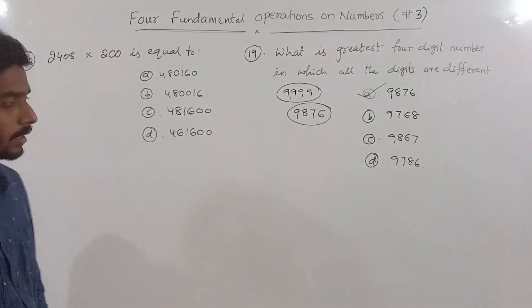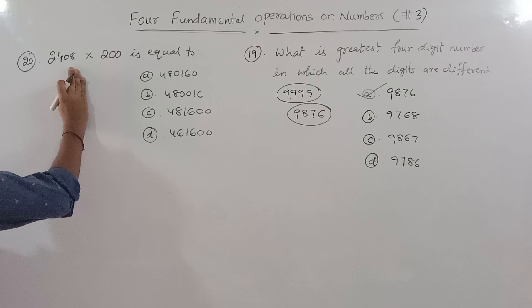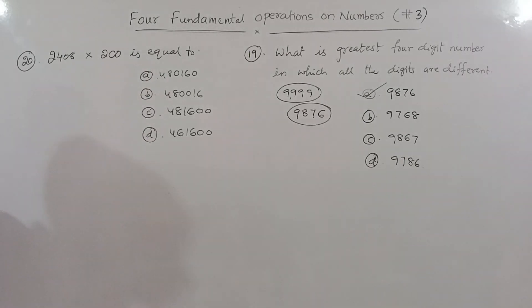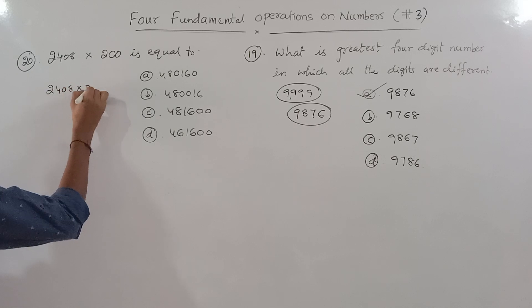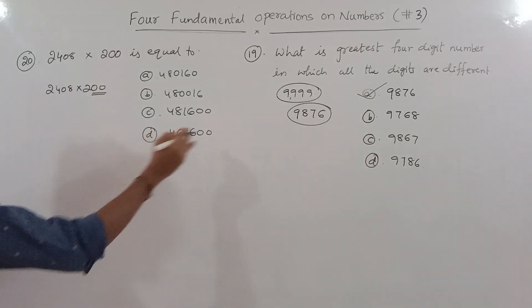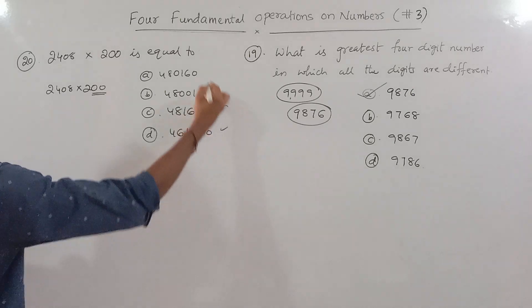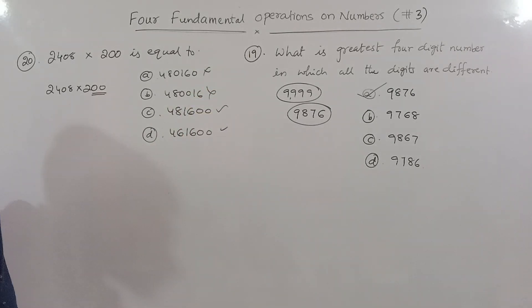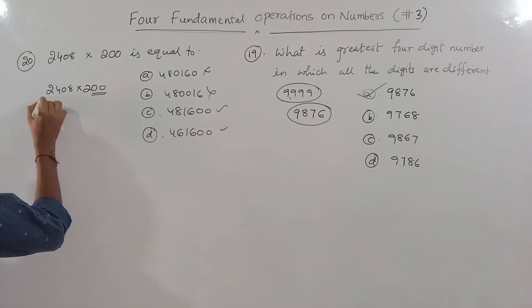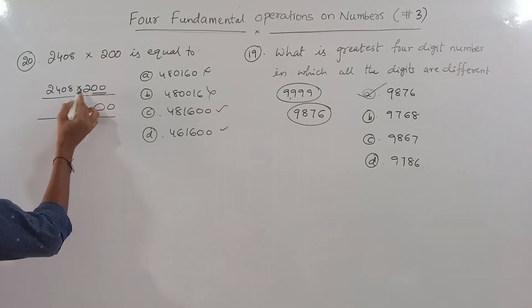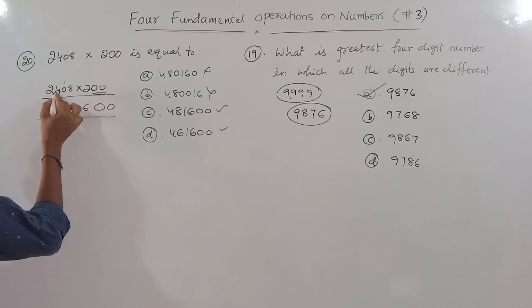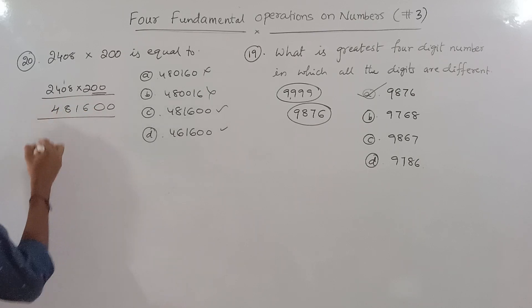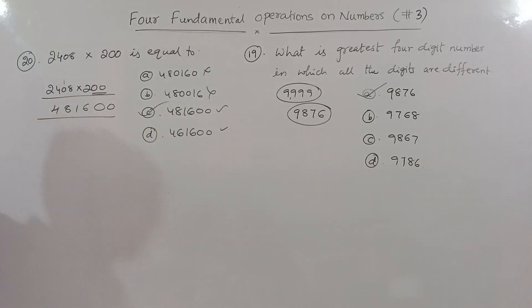Question 20: 2408 × 200. Multiply 2408 by 200: 2408 × 2 = 4816, then add two zeros to get 481,600. So the answer is 481,600.